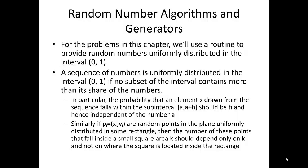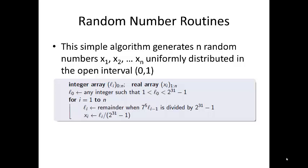Let's take a look at how to program one of these random number routines. If you want to program a random number generator, then the one on this screen should be satisfactory, provided you have a machine with 32-bit word length. This simple algorithm generates n random numbers, x1, x2, all the way to xn, uniformly distributed in the open interval 0,1.